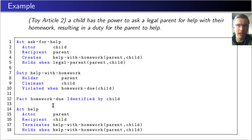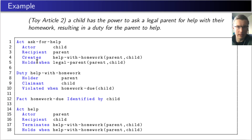The second article says that a child can ask a legal parent for help with their homework, and that the effect of asking for help is the creation of a duty for the parent to help. This is formalized using an act-type decoration for the type 'ask for help'. The actor and recipient components can be thought of as parameters of the action — the first captures the party that can perform the action, and the second captures the party affected by it. The effect of the action is to create a duty 'help with homework', and the action is only enabled when the parent is indeed a legal parent of the child. The duty has a violation condition stating that the duty is violated when the homework of the child is due. The fact 'homework due' can be thought of as a predicate over children, and an input event will trigger the creation of a 'homework due' instance. The action 'help' will terminate the duty — to prevent violating a duty, an actor must perform some action that terminates the duty before it is violated.